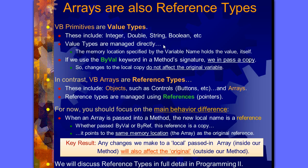Value types are managed directly. What that means is the memory location specified by the variable name holds the value itself. Let's say we have a variable that's an integer, called myint. That name refers to a memory location. There's a place where the variable is stored, and myint refers to that.